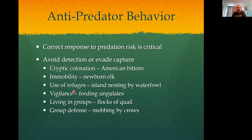Animals also can use refuges — places where predators can't get to. A lot of birds, for example, will nest on islands, which are hard for small rodents to get to, where they would eat the eggs. There's also what's called vigilance, where one animal watches while the other animals eat or drink, and they take turns doing that.